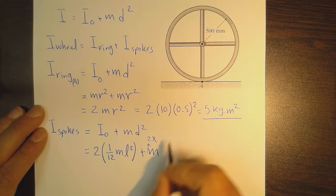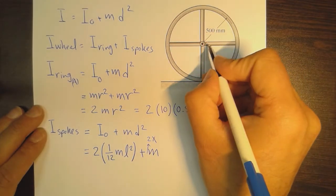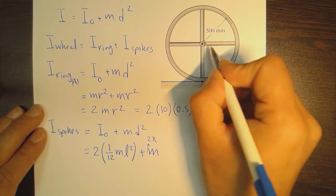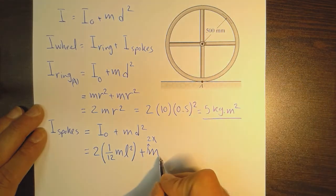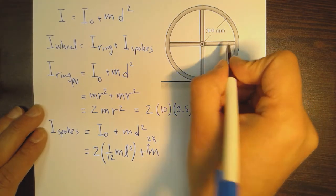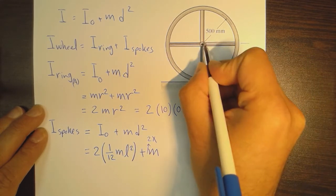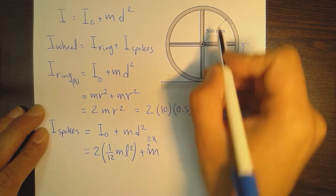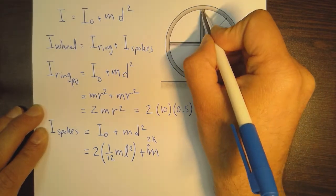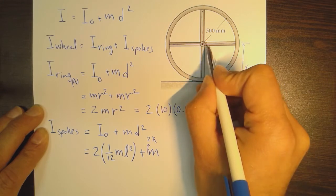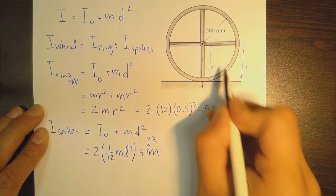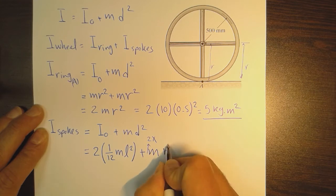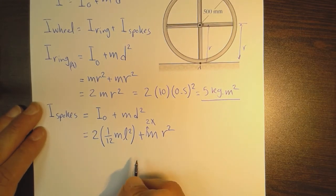The distance between the centroid for each rod is r. For this rod, the distance between its centroid and point A is r, and for the other rod it's also r. That's why we have two values here times r².